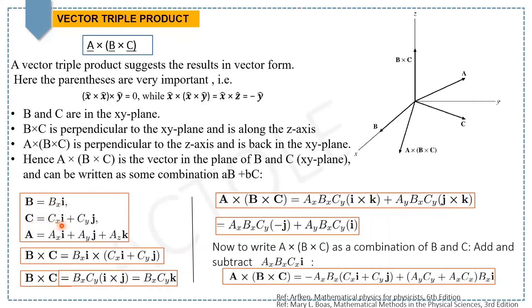so C = Cx i + Cy j, and A has all three components.